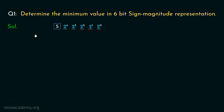In the previous session, we learned that when the MSB is 0, the number is a positive value, and when it is 1, the number is a negative value. Since we are to determine the minimum value, we will place 1 in the MSB position. In the remaining bit places, if we put ones, this entire structure will represent the largest negative number in 6-bit sign-magnitude — in other words, the minimum value.